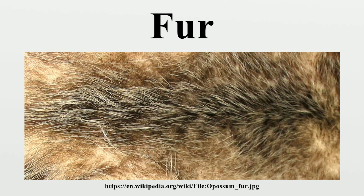Artificial selection: humans have artificially selected some domesticated mammalian species to have breeds that are hairless. There are several breeds of hairless cats, perhaps the most commonly known being the sphinx cat. Similarly, there are several breeds of hairless dogs. Other examples of artificially selected hairless animals include the hairless guinea pig, nude mouse and the hairless rat.